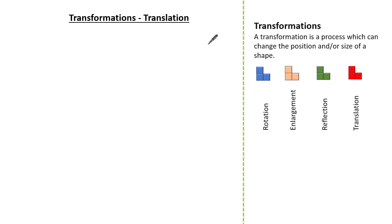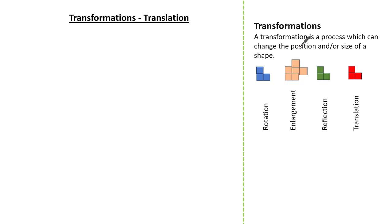Hello everyone and welcome to this tutorial on translation, which is one of our four transformations. A transformation is a process which can change the position and or size of a shape. In mathematics we have four transformations: rotation, enlargement — and it's important to note that enlargement doesn't always make the object bigger, it can sometimes make it smaller — reflection, and translation. Today's tutorial will be looking at translation.